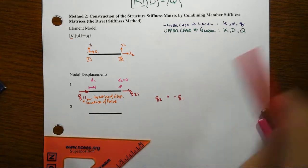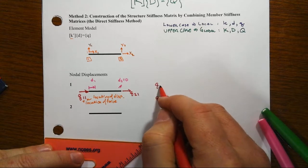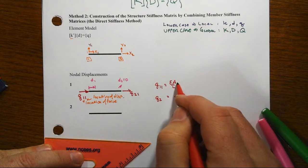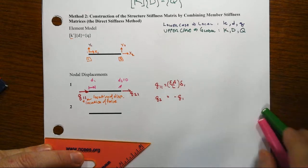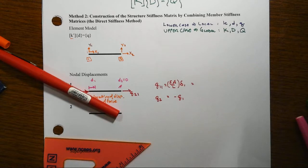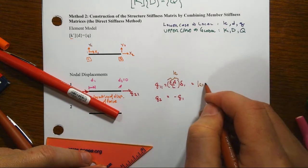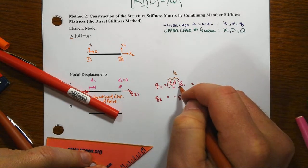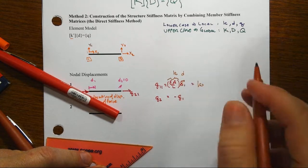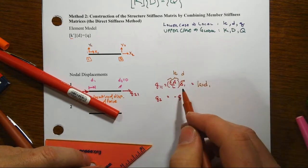And so we'll have from our basic axial force deformation relationship here, we know that q1,1 is equal to EA over L of the member times delta 1. And so we could simplify that down a little bit, and this will be our axial stiffness. So that would be just k times, well, we're also using here that symbol d rather than delta.